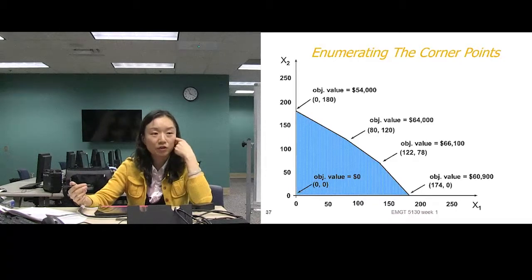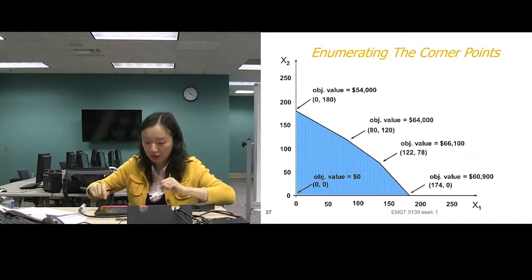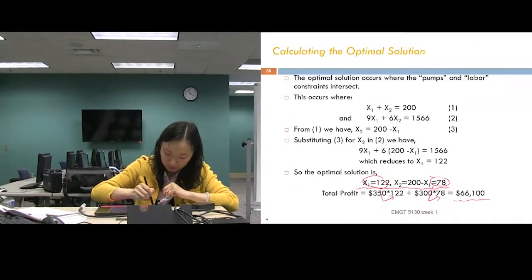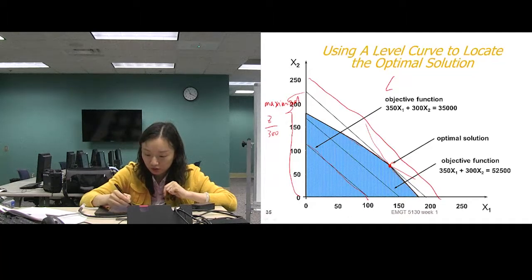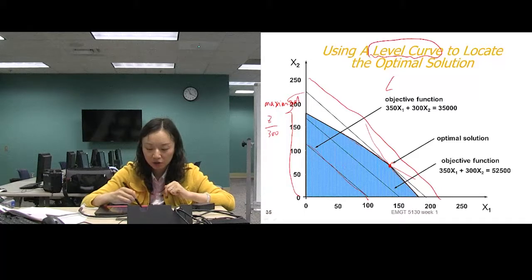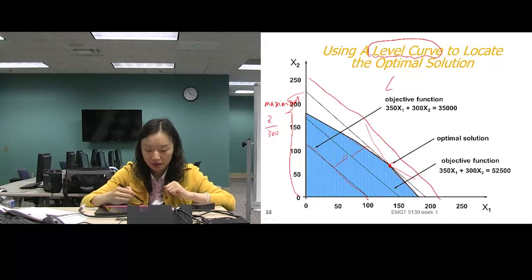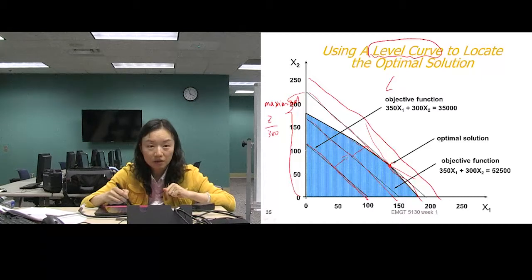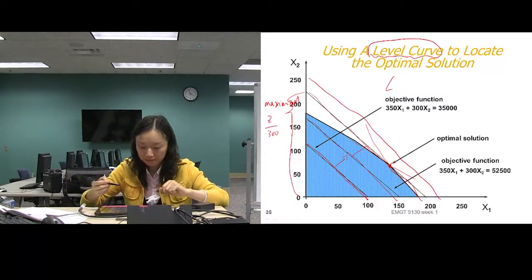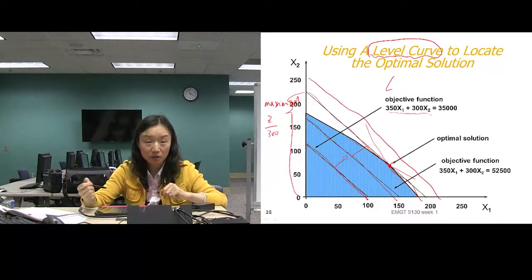There are two ways to find the optimal solution graphically. The first is using level curves: draw lines using the objective function's slope and keep moving them until the line just touches the edge of the feasible region. Those parallel lines associated with the objective function are called level curves. The slope of the level curve is determined by the objective function coefficients.